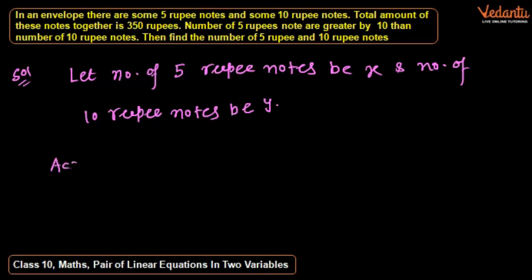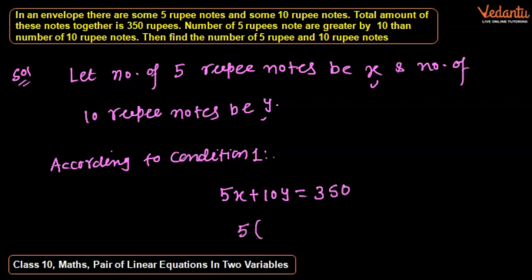According to condition first, the total amount of these notes together is 350. So 5x plus 10y equals 350 rupees.